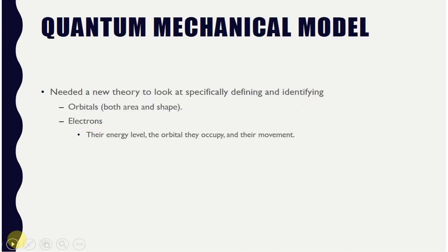The quantum mechanical model came about because we needed to reconcile what we saw with the continuous spectrum and what we knew about the Bohr model. The Bohr model only worked with hydrogen — it did not work with anything else because it was focused primarily on circular orbitals. So before we get into this, let's look at what an orbital is and focus on the energy of electrons inside each orbital.